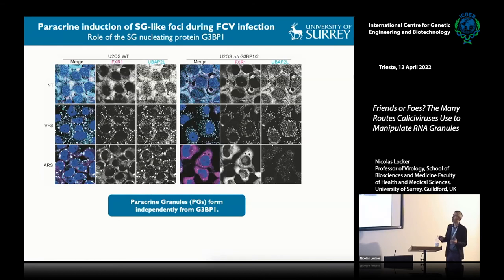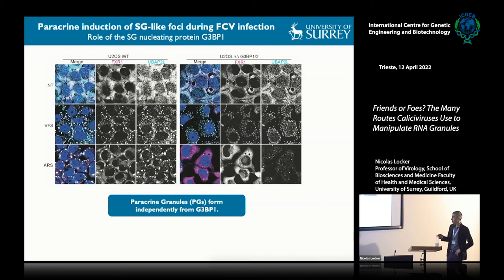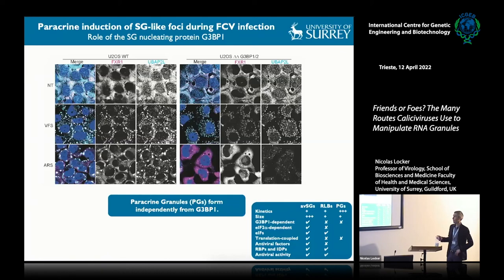One fundamental property of stress granules is that they absolutely depend on G3BP1 for their assembly. When we take G3BP1 knockout cells and stimulate them with arsenite, we don't form any stress granules. However, when we took those knockout cells and stimulated them with virus-free supernatant, we still formed those SG-like foci. This gave us a bunch of properties fundamentally different from stress granules or RNAsel bodies, so we decided to name these foci paracrine granules, establishing that they are a different type of biocondensate assembling during viral infection.